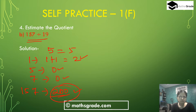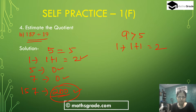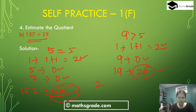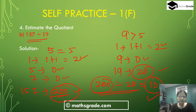Now for 19, we round to the nearest 10. The units digit is 9, and 9 is more than 5, so add 1 to the tens digit. The tens digit 1 changes to 2, and units digit 9 changes to 0. So 19 rounded to the nearest 10 is 20. Now 200 divided by 20 is 10. So estimating the quotient of 157 divided by 19 is 10.